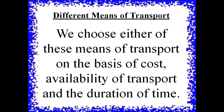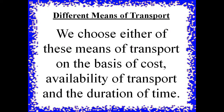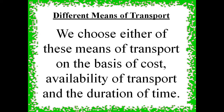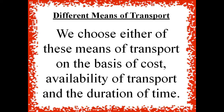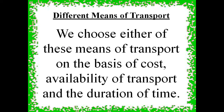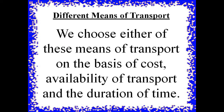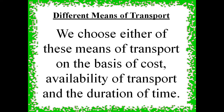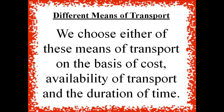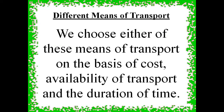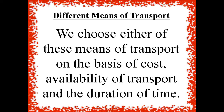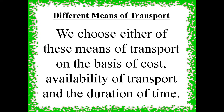The different vehicles that we use to travel from one place to another — like train, aeroplane, car — are called means of transport. There are three means of transport: land transport, water transport, and air transport.